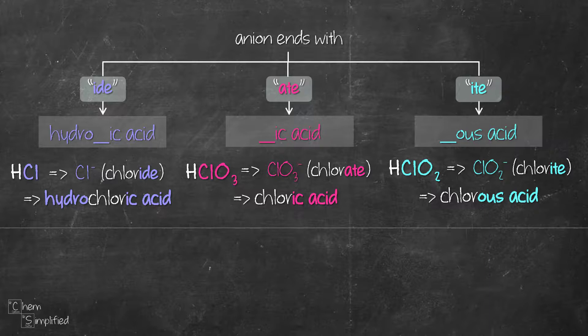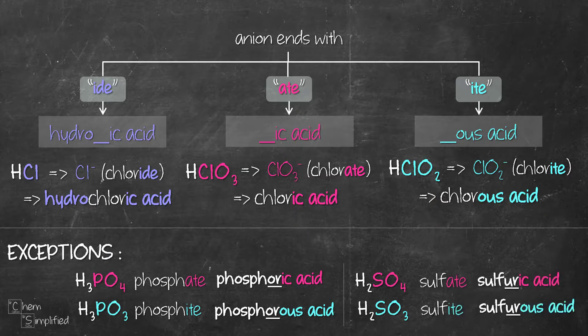These simple guidelines work for pretty much all the anions except for phosphate, phosphide, sulfate, and sulfite. For some reason, we can't just simply replace the ATE and ITE with the suffixes for these ions. We need to add in a few more letters when naming these acids.